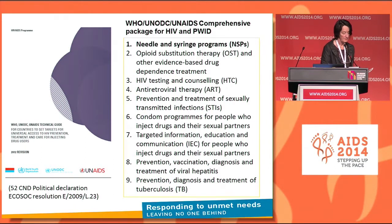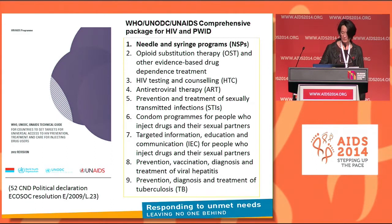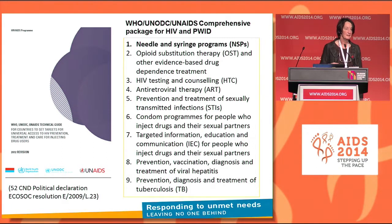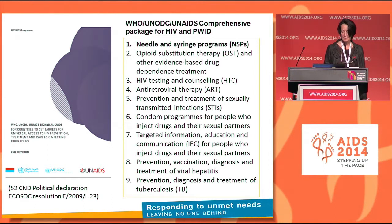The needle and syringe program is the very first intervention of the comprehensive package for HIV and people who inject drugs. This comprehensive package has been endorsed by all the UN — the General Assembly, the Commission on Narcotic Drugs, the UNAIDS program connecting board by ECOSOC. The interventions are ranked by order of priority, and it is easy to understand that if you want to prevent transmission through injection equipment, the needle and syringe program is the very first intervention to put in place.